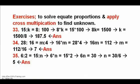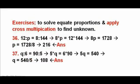Exercises 33, 34, and 35. To solve, equate proportions and apply cross multiplication to find the unknown. The answers are 200, 16, and 108, respectively. See image.